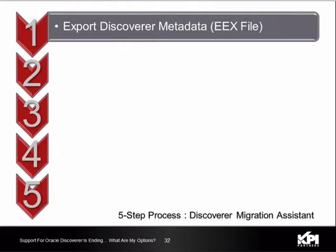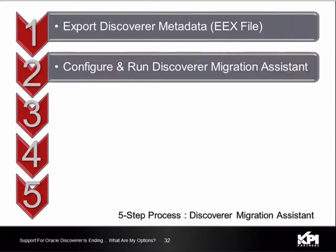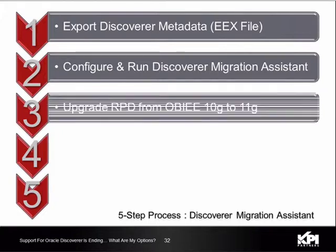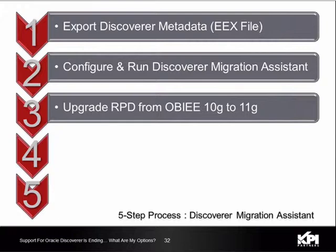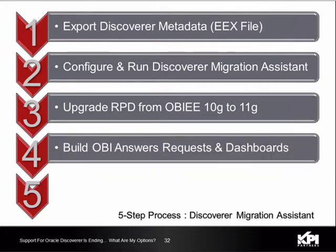It's a five-step process with the Discoverer Migration Assistant. You export your Discoverer metadata into an EX file, then configure and run the Discoverer Migration Assistant — this is an iterative process where you run the utility, look at the RPD generated, tweak configuration parameters, and regenerate. The Migration Assistant generates an Oracle BI EE 10G RPD, so you then run the upgrade process to move from OBIE 10G to 11G. Finally, you use the generated metadata to build OBIE Answers requests and dashboards, deploying enhanced content for your users.